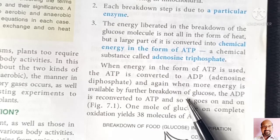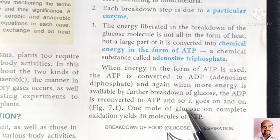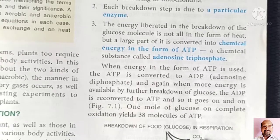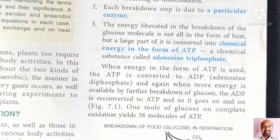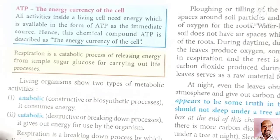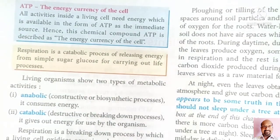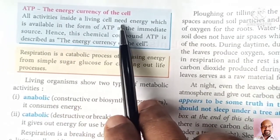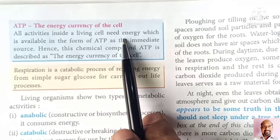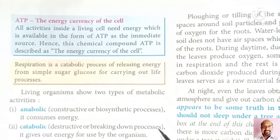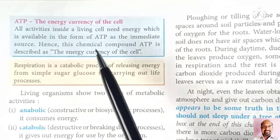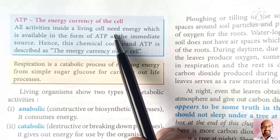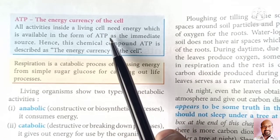When more energy is available from the further breakdown of glucose, this ADP is again converted into ATP. This process continues throughout life. ATP, which is the energy currency of a cell, is produced by the process of respiration. ATP is considered the energy currency because energy in the form of ATP is needed for all activities inside a living cell.